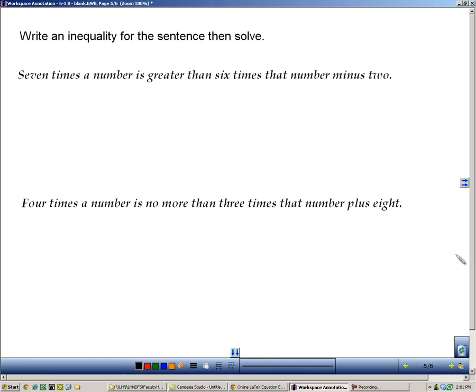Here are a couple of examples of that. First one says 7 times a number is greater than 6 times that number minus 2. Well, 7 times a number is just 7n. That's multiplication. Is greater than—that's actually pretty easy. Greater than looks like that. And then 6 times that number is there, and then minus 2 comes from there. So 7n is greater than 6n minus 2.